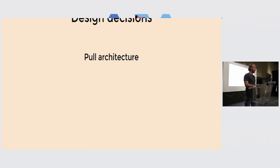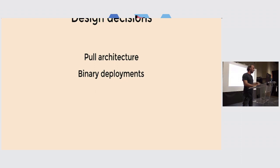To go through some of the design decisions: a lot of deployment tools use a push architecture where you push things to servers. CachixDeploy uses a pull architecture. Nix is closer to the pull model — if you pull things from a binary cache and everything is already there, it's much easier to scale, say launching a thousand machines. Binary deployments are used because there's no reason to evaluate or build anything on the target machine.